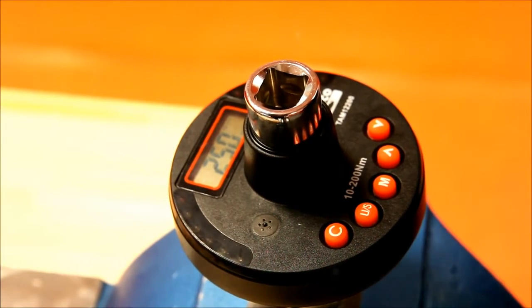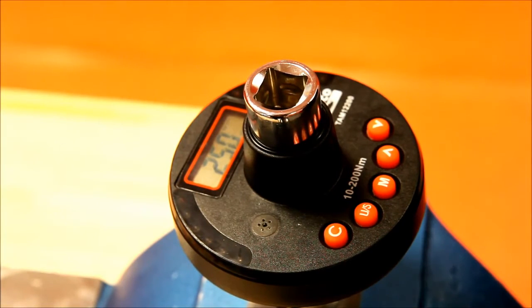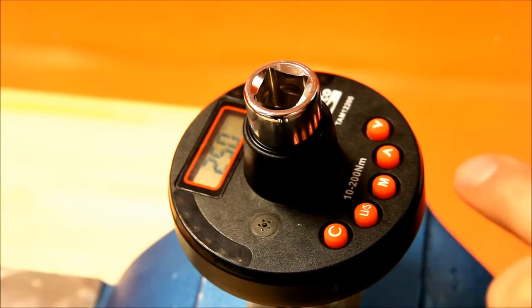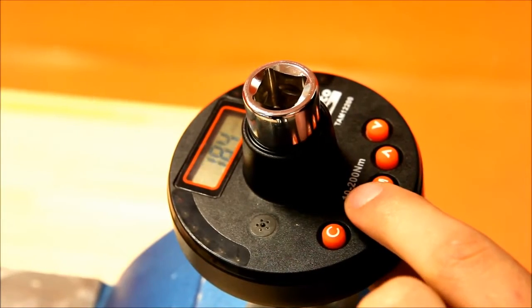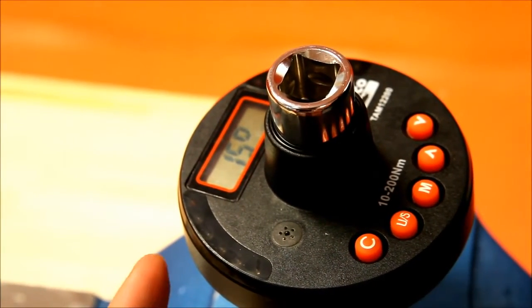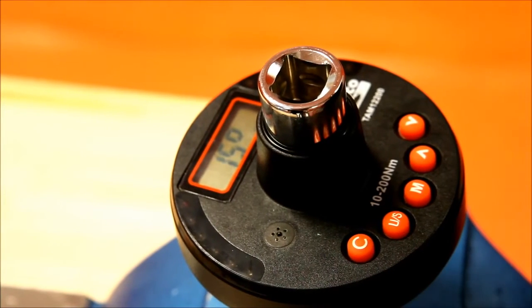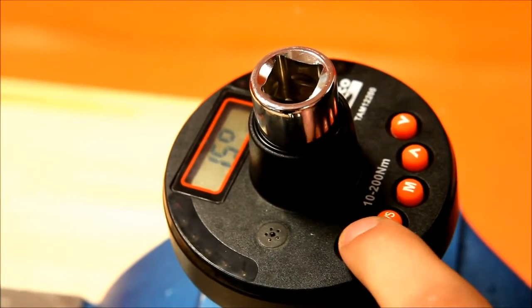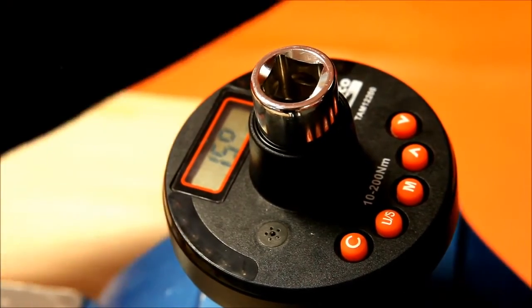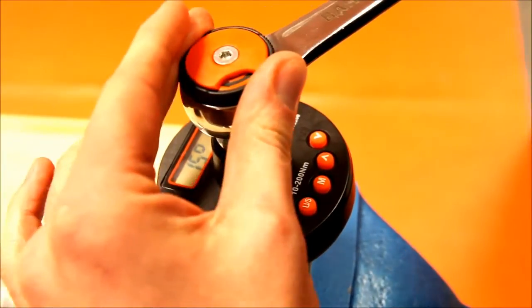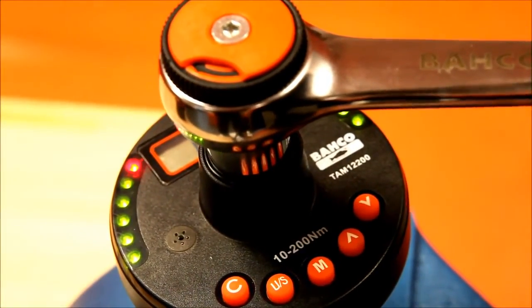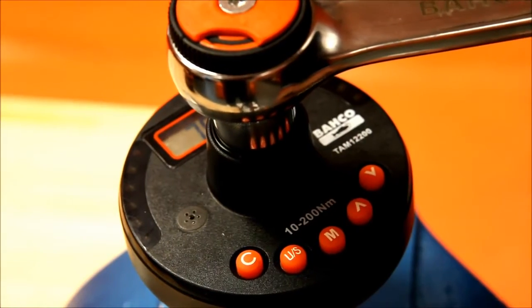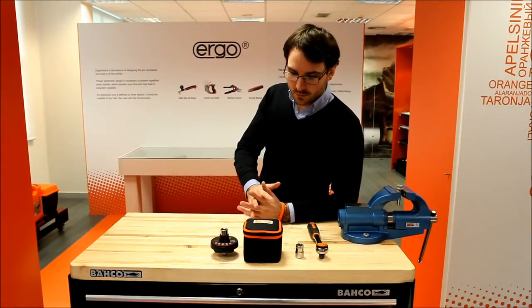We just did a 25 newton meter tightening operation and let's say we also now want to add an angle tightening to that. By pressing the U and S button we choose between the different values and we scroll down to angle. We now have it set for 15 degrees. We confirm that value by pressing the C button and the adapter will calibrate itself. We are now ready to tighten. We did 15 degrees angle.